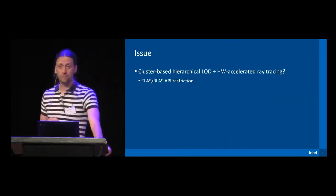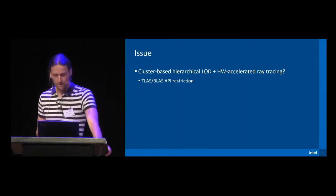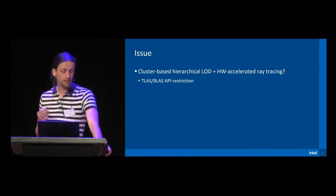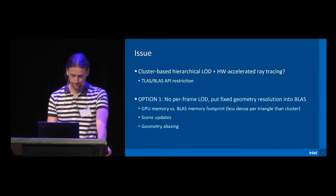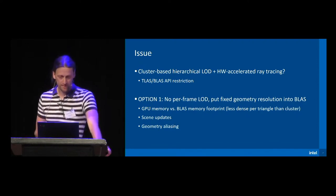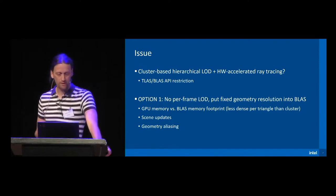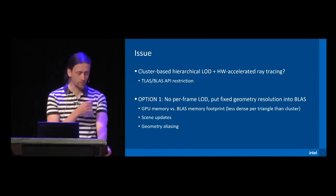The issue is that Nanite works great with a rasterization-based backend in mind, but it's not really straightforward how to combine the per-frame cluster-based hierarchical LOD selection with hardware-accelerated ray tracing. The problem is that the decompressed cluster geometry needs to be turned very quickly into some form of bottom-level acceleration structure — BLAS — that the ray tracing hardware can actually consume. Option one: forget per-frame LOD. Put a fixed geometry resolution, most likely the highest, into one or more BLASes and reuse those for rendering all frames. The problem is that the BLAS memory footprint is significantly less dense than the lossy compressed cluster representation, so one runs out of GPU memory pretty quickly. Also, modifying the scene for streaming cluster data will be pretty difficult, and with a fixed resolution, one ends up with geometric aliasing. Some form of this option is what Nanite does today.